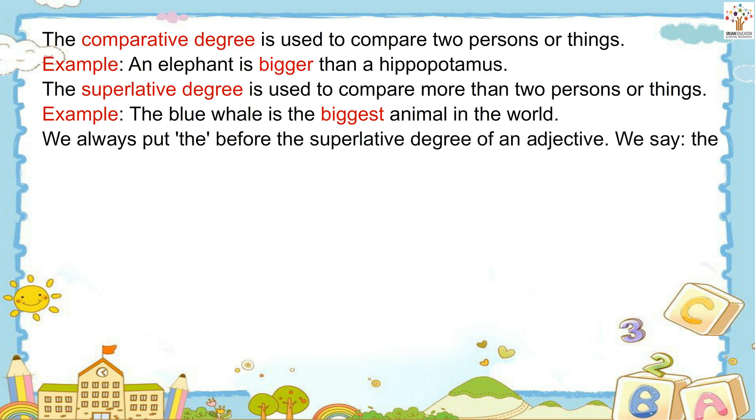We always put 'the' before the superlative degree of an adjective. We say: the biggest, the worst, the most intelligent, etc.